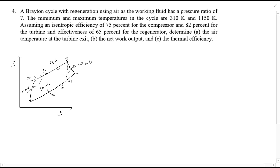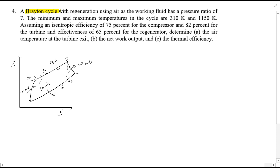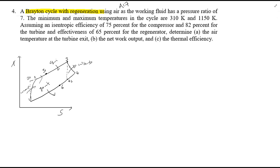Hello and welcome to example sheet 4, question 4. We are looking at a Brayton cycle with regeneration with air as the working fluid. We're already thinking it's going to be table A17 that we'll be using, since I'm going to solve this question using variable specific heats, so I will be using the tables. I do suggest you also go through these questions using the equations and have a look at where your answers differ.